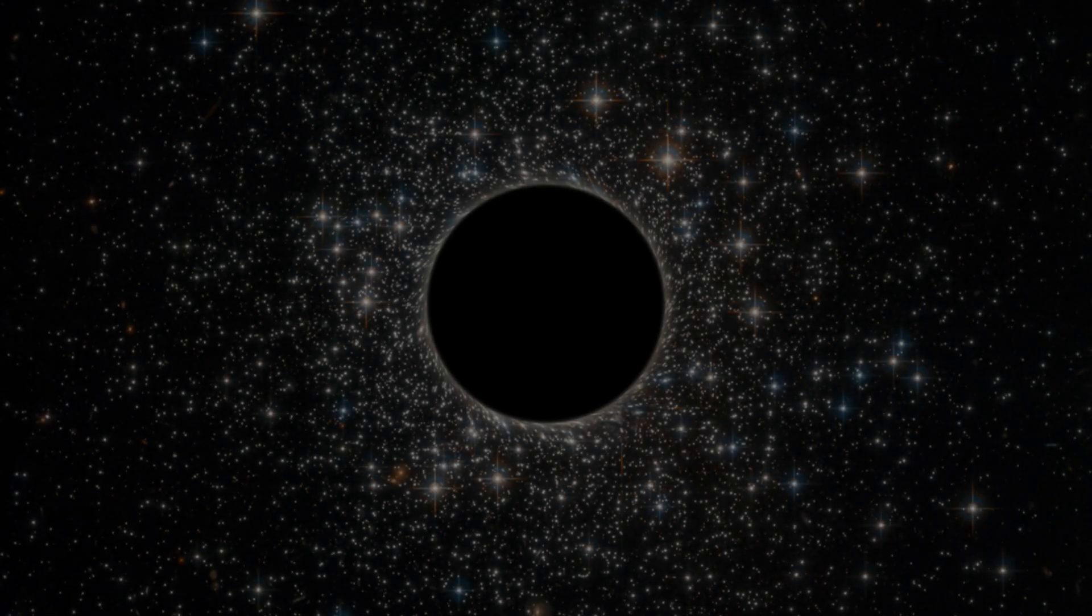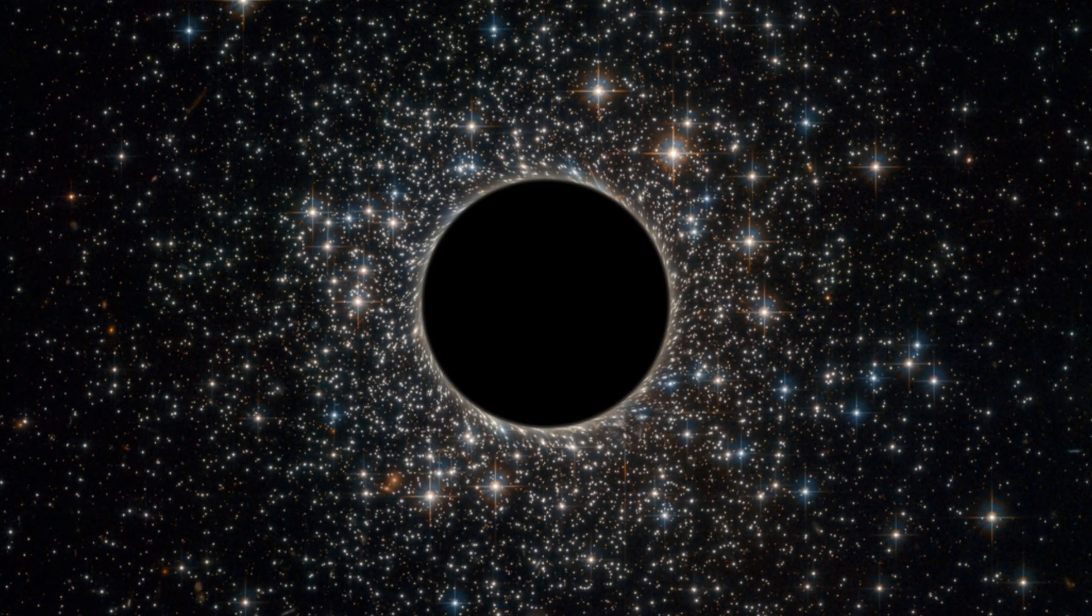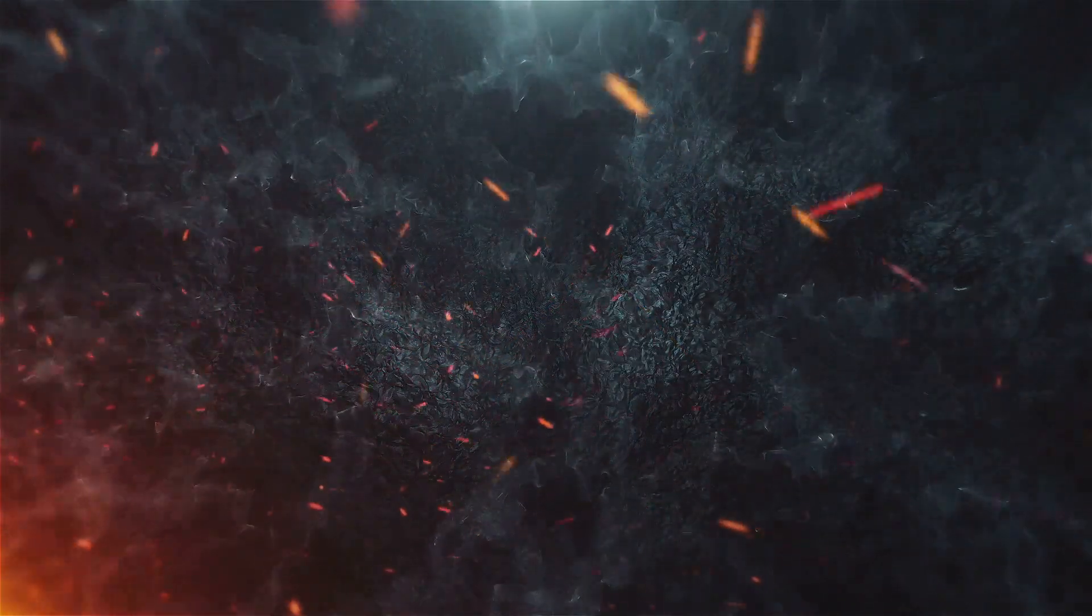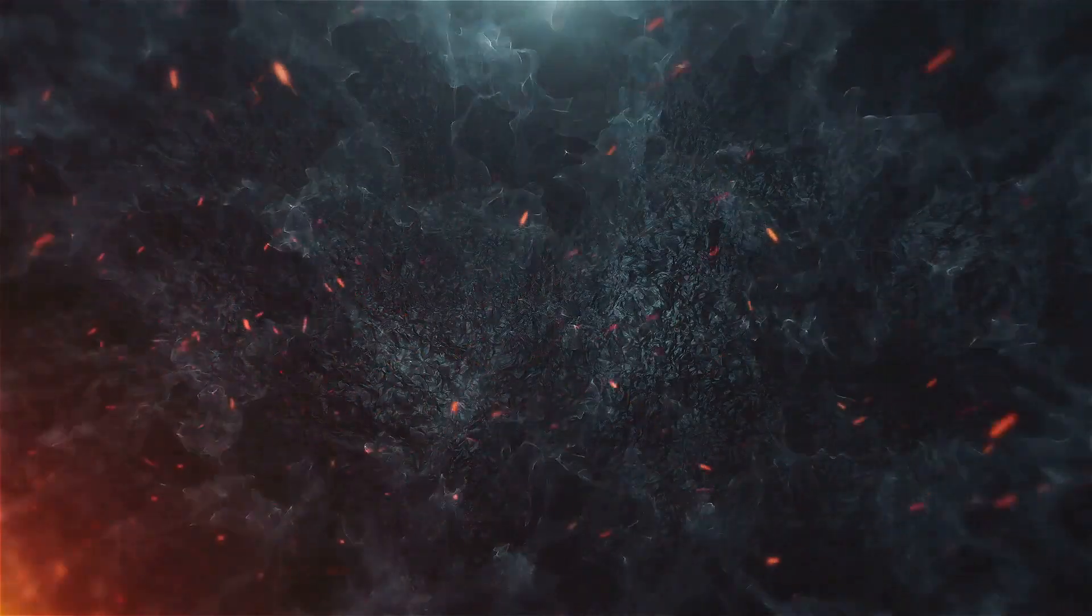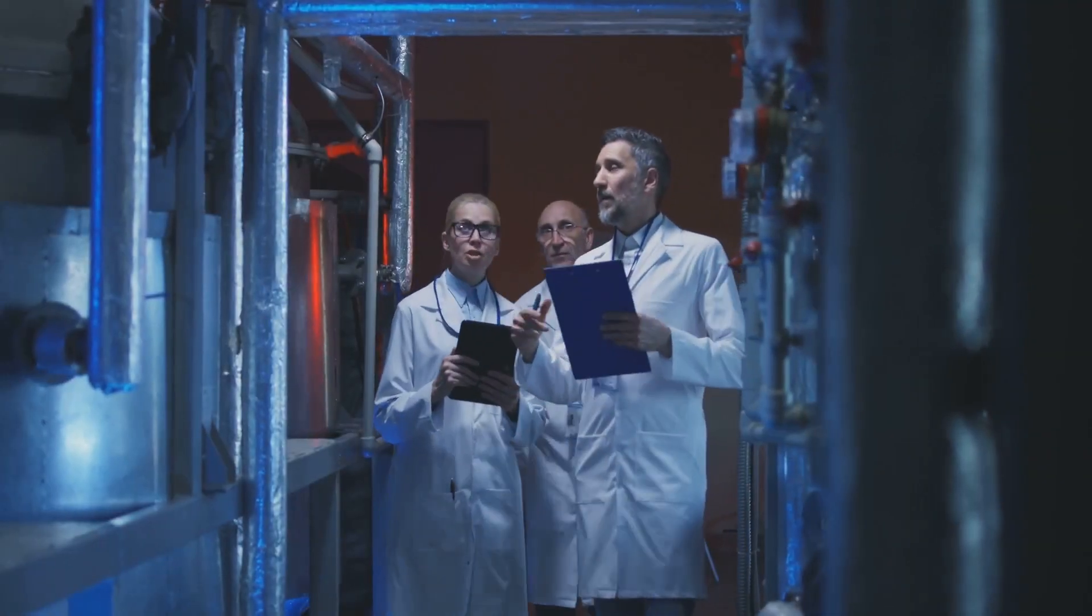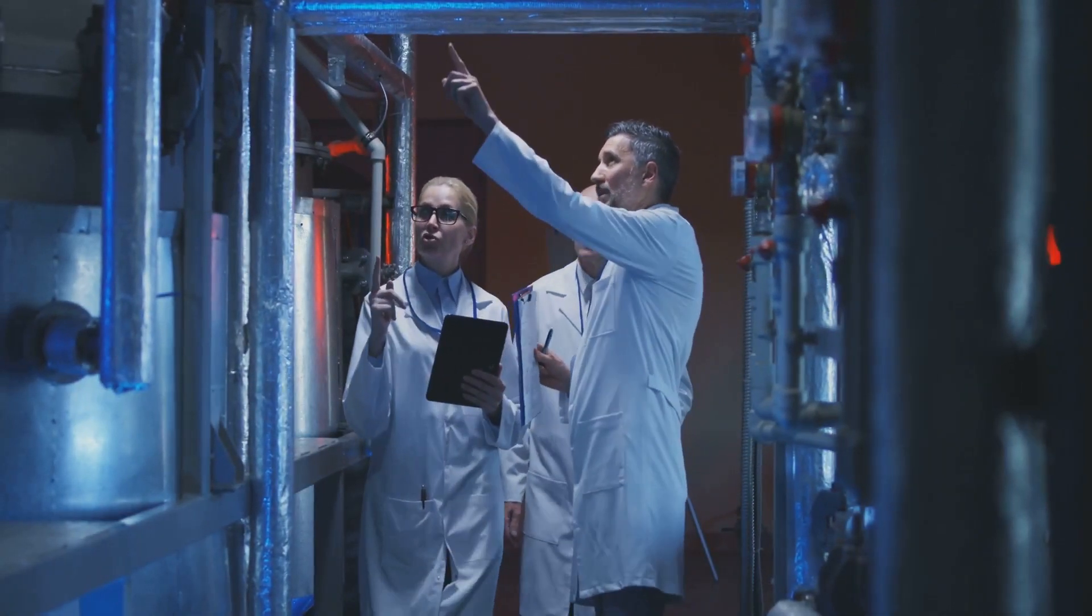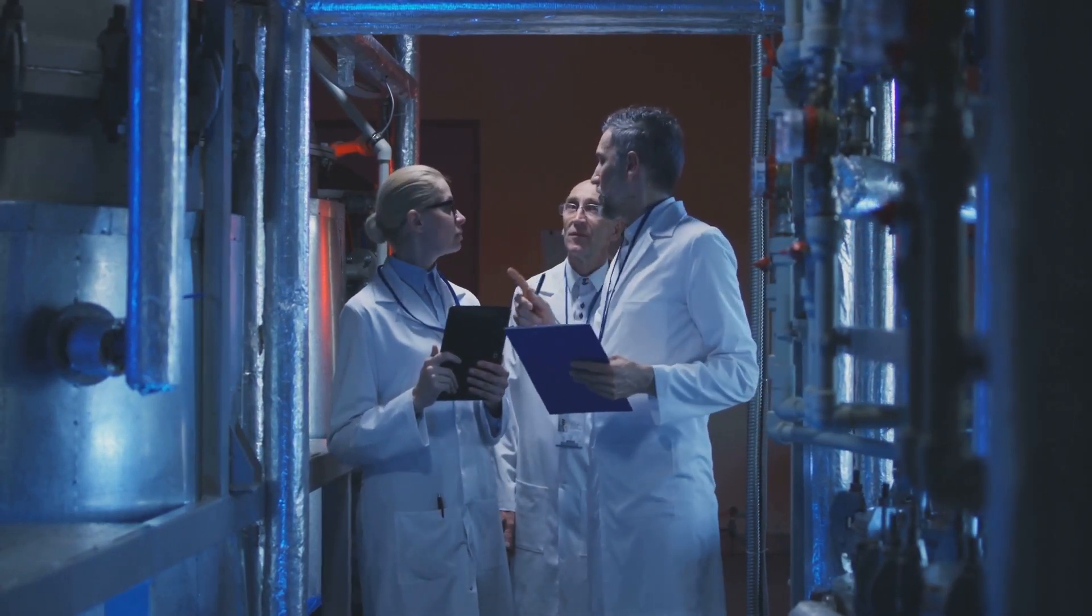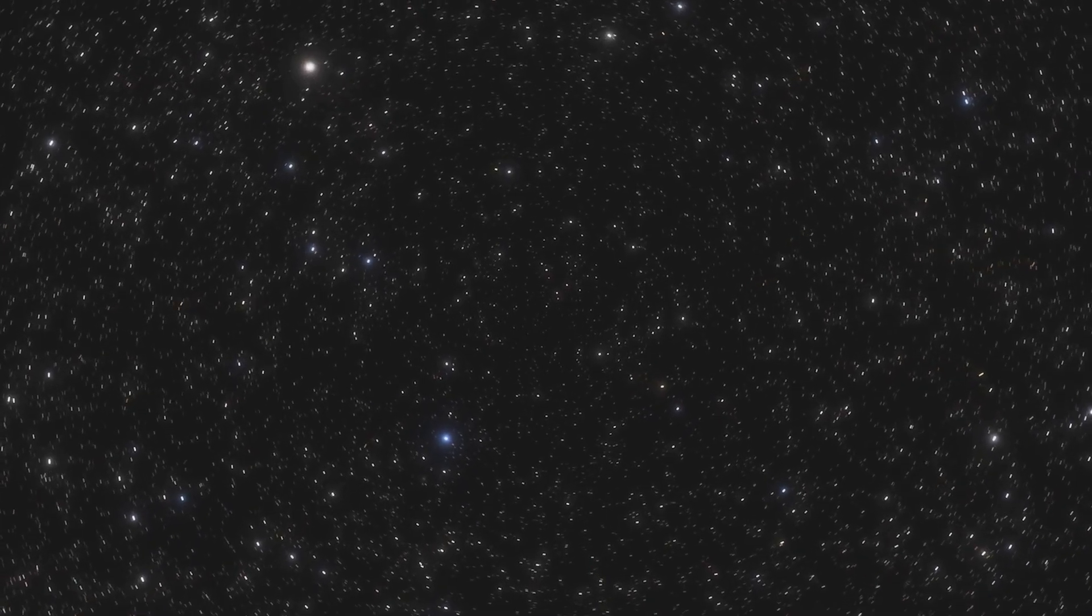Supermassive black holes play a crucial role in shaping their galaxies. Their gravity not only influences the movement of stars, but they may also control the flow of gas and even regulate star formation in their galaxy. So, could the size of a galaxy's black hole be linked to the size of the galaxy itself? Some scientists think so, and solving this puzzle could unlock even more secrets about how galaxies and black holes grow together.